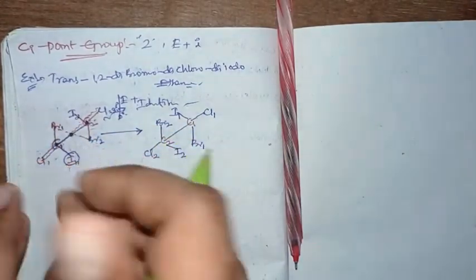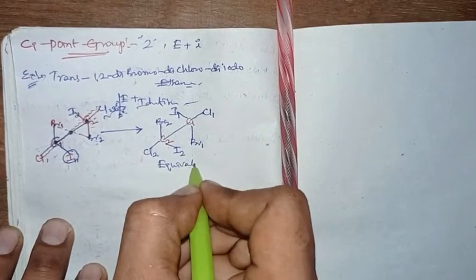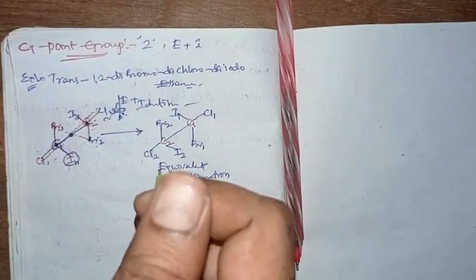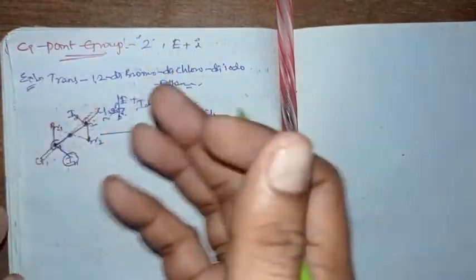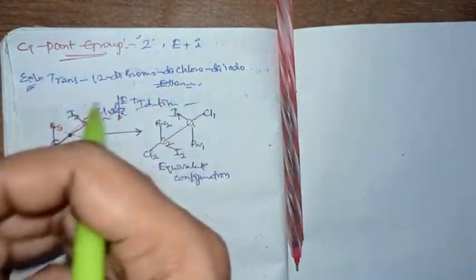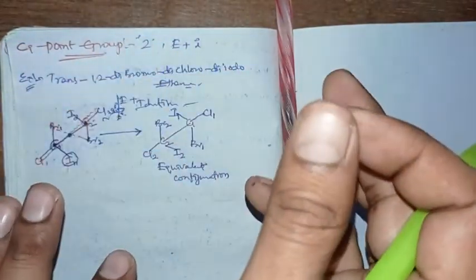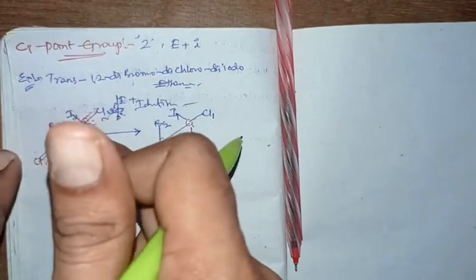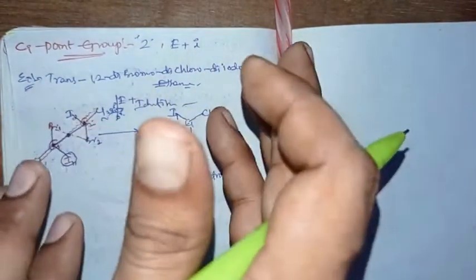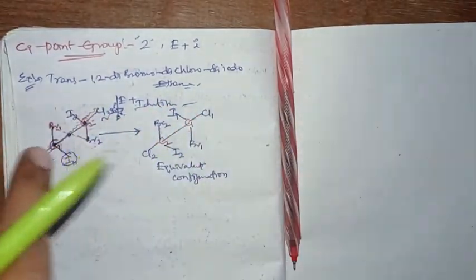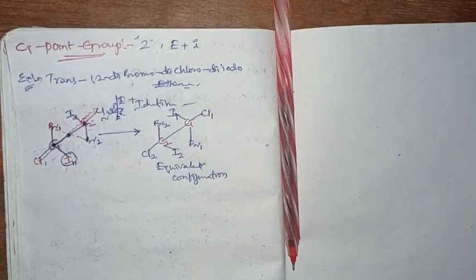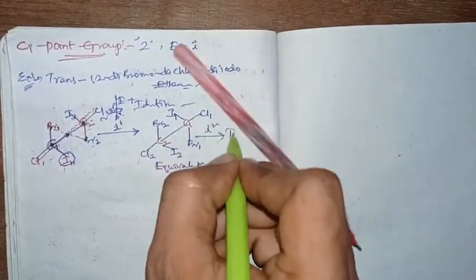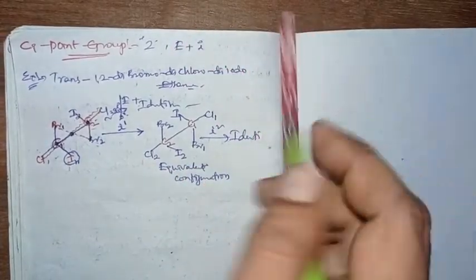In all this inverting of atoms, what is happening: similar carbons are replaced by each other, similar bromines are replaced by each other, similar chlorines are replaced by each other, similar iodines are replaced by each other. When similar atoms are replacing each other, it surely generates an equivalent geometry — an equivalent configuration. So the inversion center is present here.